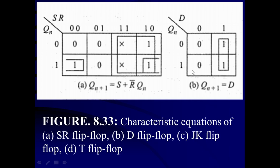A similar characteristic equation can be obtained for the D flip-flop. In a D flip-flop, Qn+1 is a function of D and Qn — two variables, so a 2-variable Karnaugh map with four locations is used. The output takes the value of D after the clock pulse. If D=0, Qn+1=0 regardless of Qn; if D=1, Qn+1=1. So the characteristic equation for the D flip-flop is: Qn+1 = D.